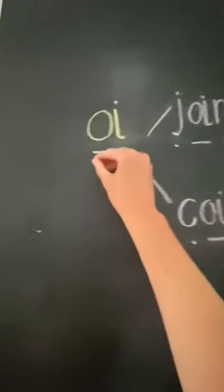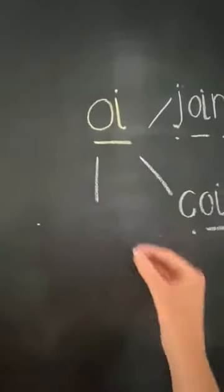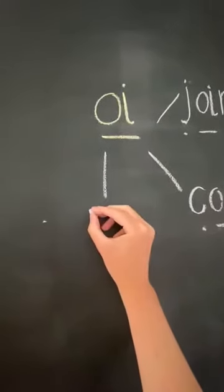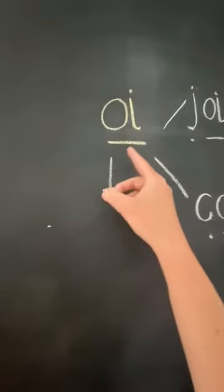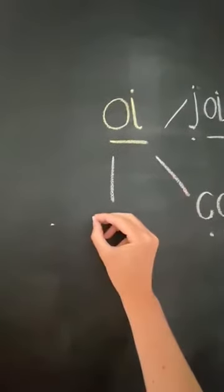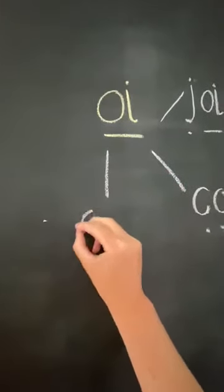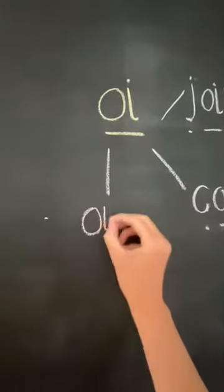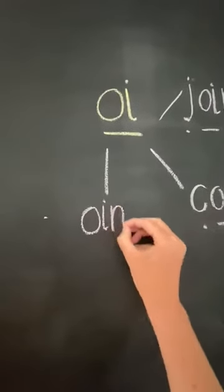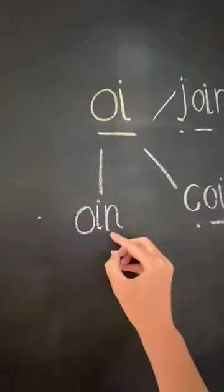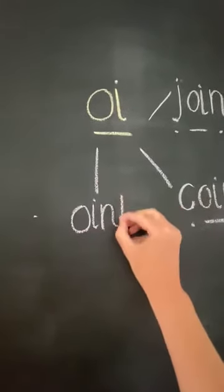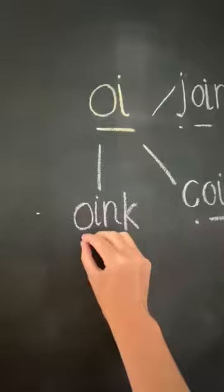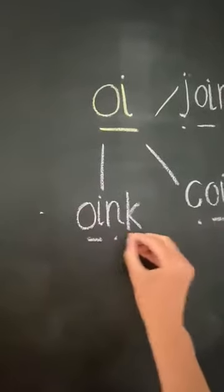This is the sound that a pig makes: oink. This starts with the digraph oi — oink. Oi, n, oink, oink.